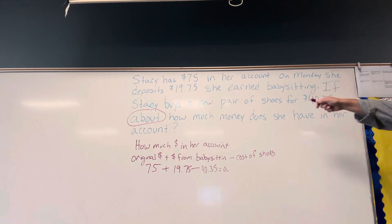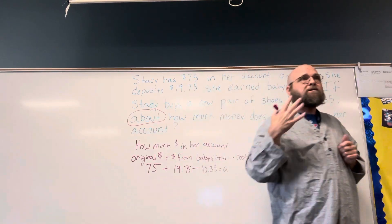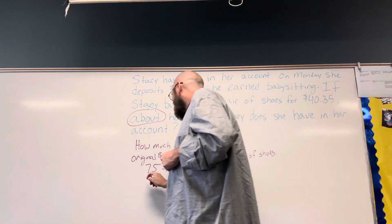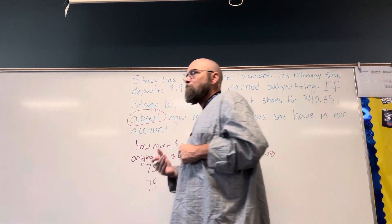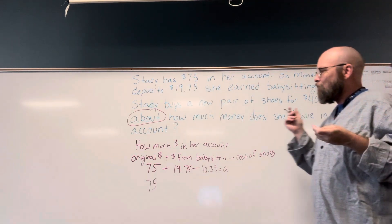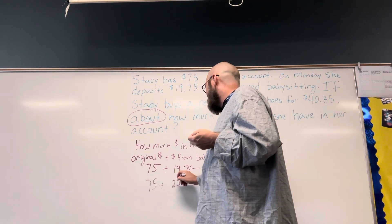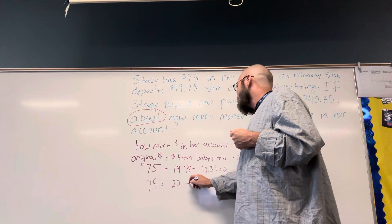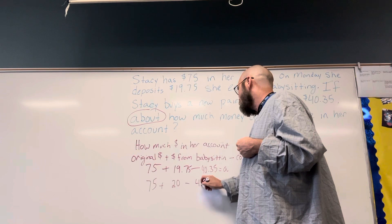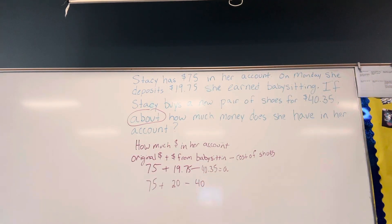So now, since it says 'about,' I'm going to make these numbers friendly to myself — friendly numbers that will help me do the math. I'm going to leave 75, because 75 is a pretty good number — it's a multiple of five, it works for quarters. And then I would change $19.75 to $20, and I would change $40.35 to $40. That would make this much easier for me to do in my head.